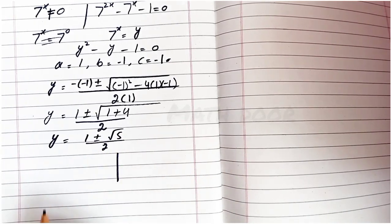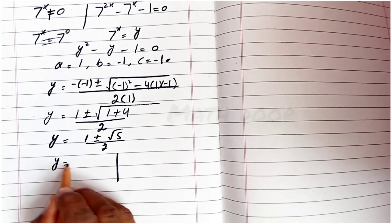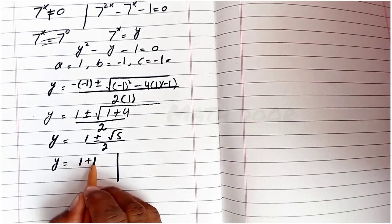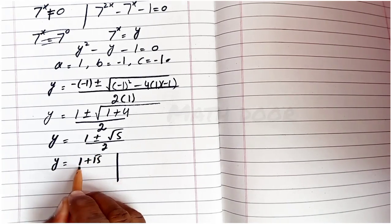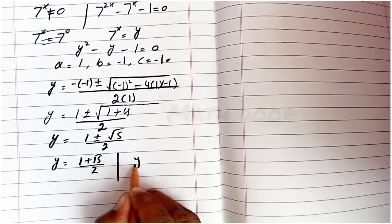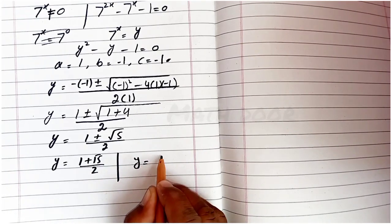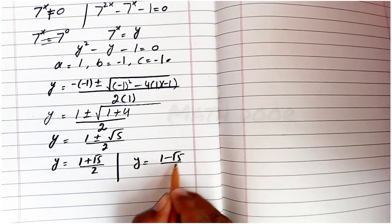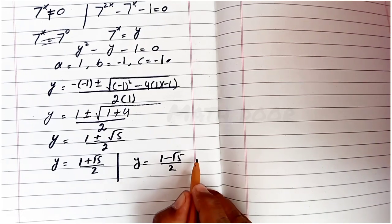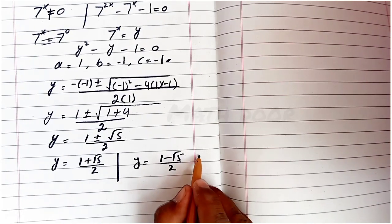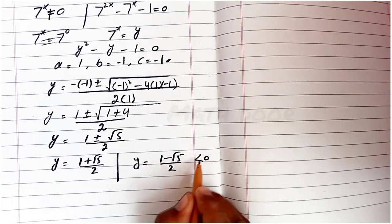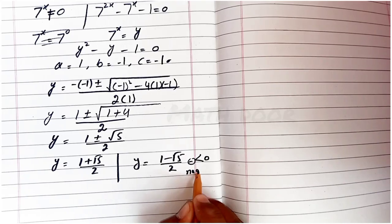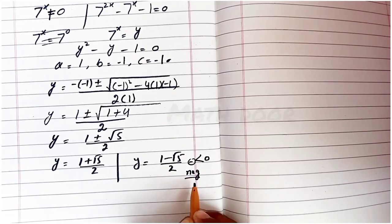This gives two values: y equals (1 plus square root of 5) over 2, and y equals (1 minus square root of 5) over 2. The second value is less than 0, so it is rejected as not valid for our equation.